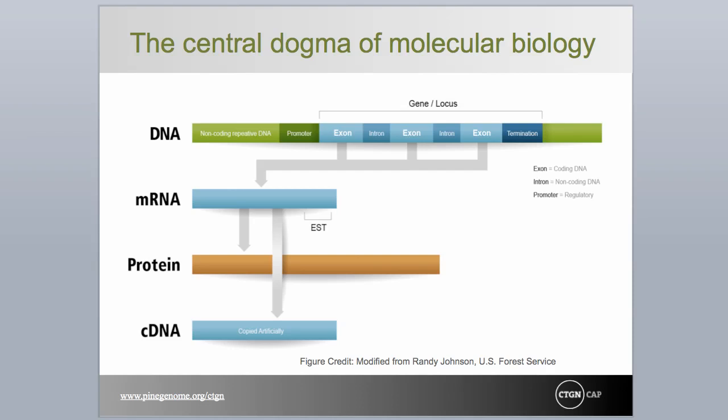The messenger RNA is subsequently translated into protein, facilitated by a number of other RNA molecules. Using an enzyme called reverse transcriptase, messenger RNA can also be used as a template to produce a complementary, or cDNA, molecule that contains only the exons of the original gene.